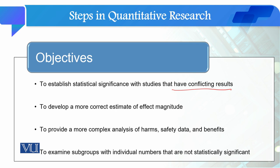دوسرا objective ہے to develop a more correct estimate of effect magnitude۔ اس میں ہم کوشش کرتے ہیں کہ ہمارا analysis زیادہ significant ہو as compared to earlier conducted studies۔ تیسرا objective ہے to provide a more complex analysis of harms, safety data, and benefits، جو single-handedly conducted studies سے زیادہ complex ہوتا ہے۔ اس میں ہم ایسے subgroups کو examine کرتے ہیں جن کے individual numbers statistically significant نہیں ہوتے۔